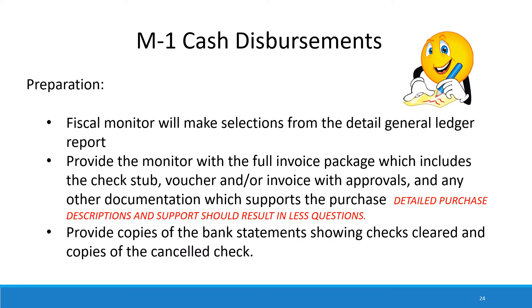Now we're going to move into the major monitoring areas. The first area is an overall review of cash disbursements. The grant manager will also make a small sample from this area, but the overall review will come from the fiscal monitoring visit, and we're going to select anywhere from 30 to 60 transactions to review. We try to make those selections from your general ledger. We would like you to provide full support for disbursements, which should include the check stub, the voucher and/or invoice containing appropriate approvals and grant allocations. If you use a purchase order system, we'd like to see the purchase order and who signed off on it.